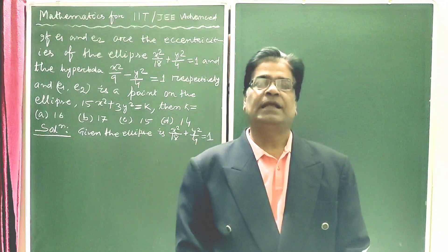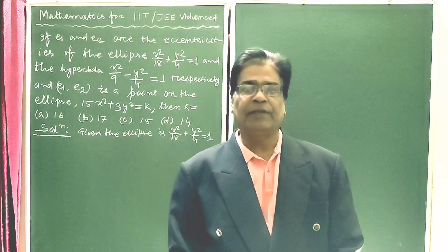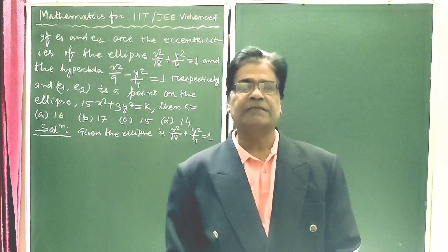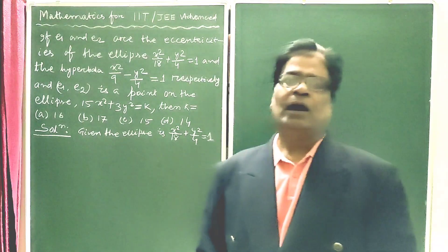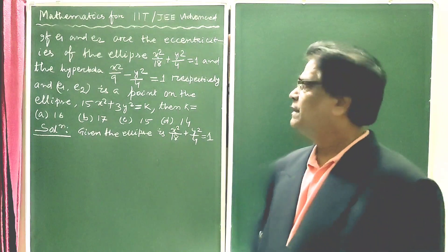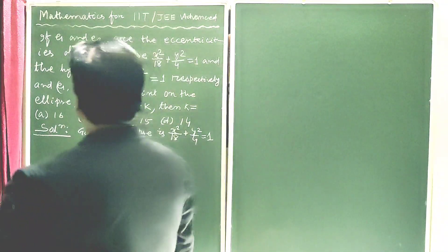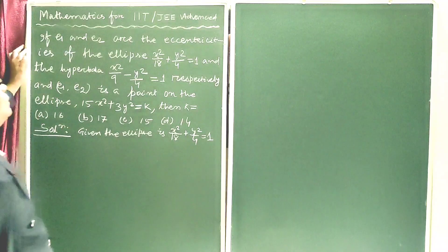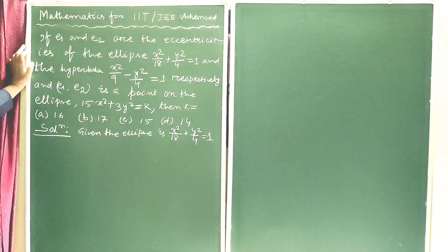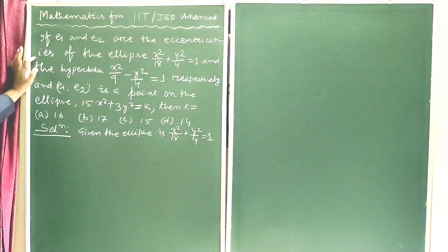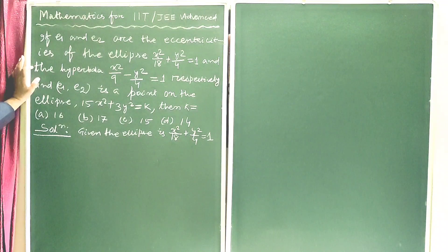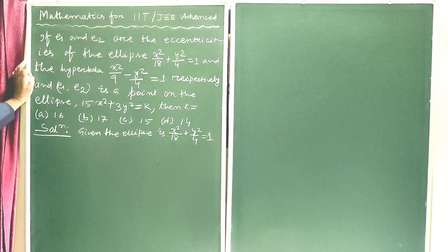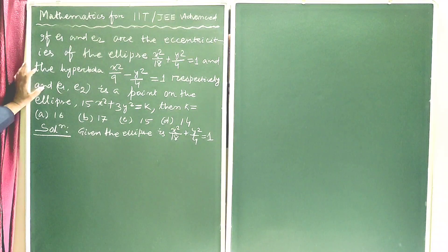Dear students, let us solve a very interesting problem on hyperbola. The question is: if E1 and E2 are the eccentricities of the ellipse x² / 18 + y² / 4 = 1, and the hyperbola x² / 9 − y² / 4 = 1 respectively,